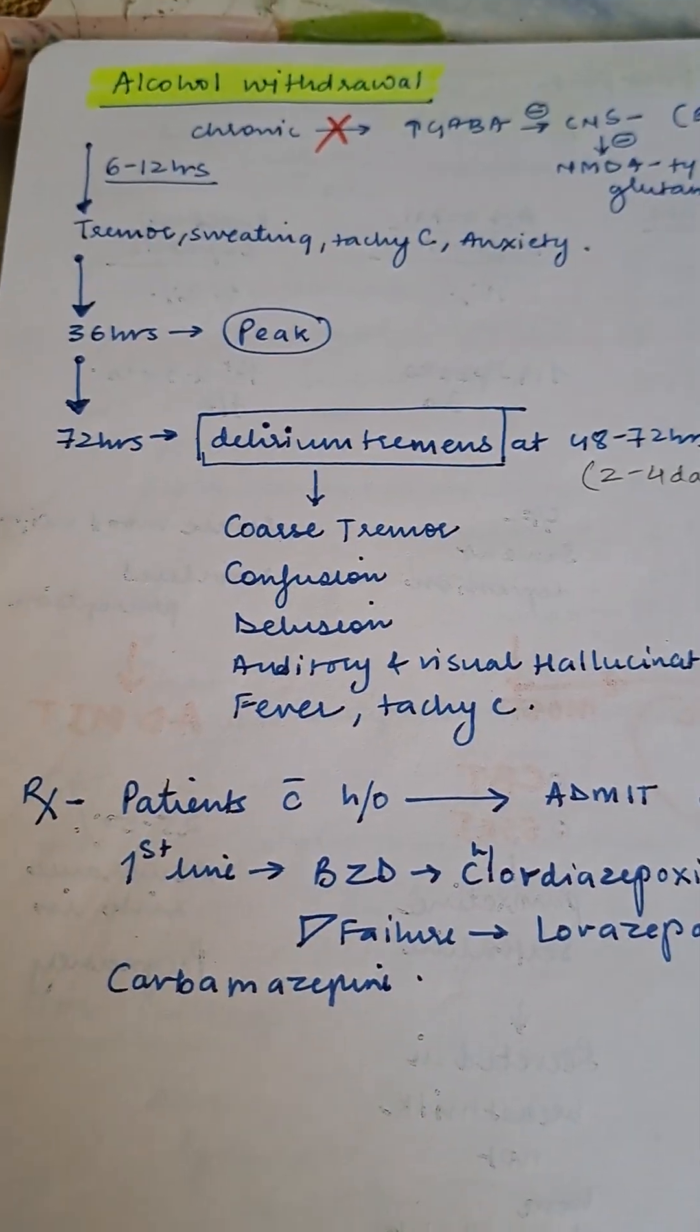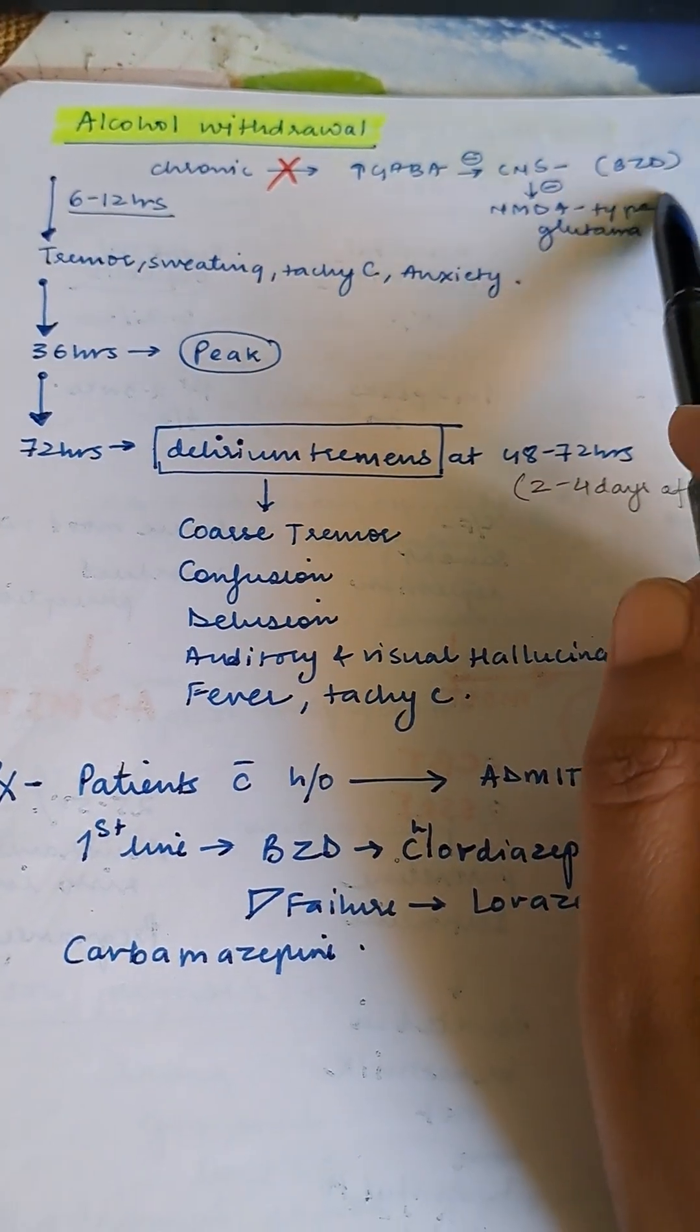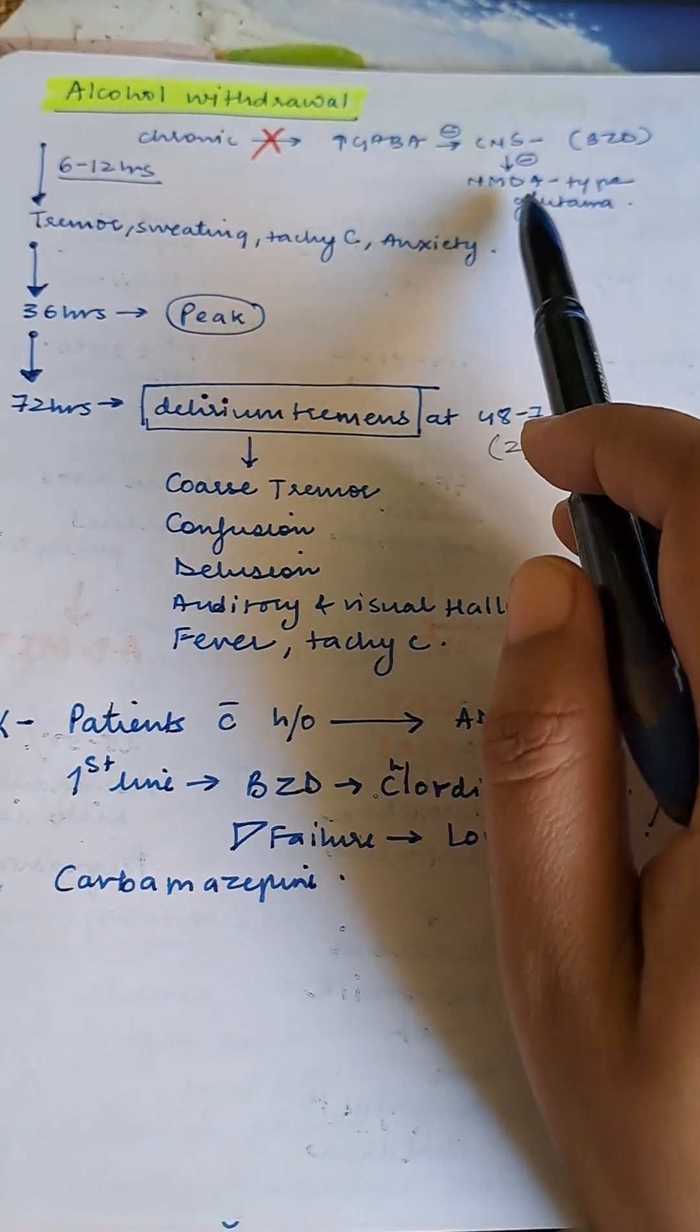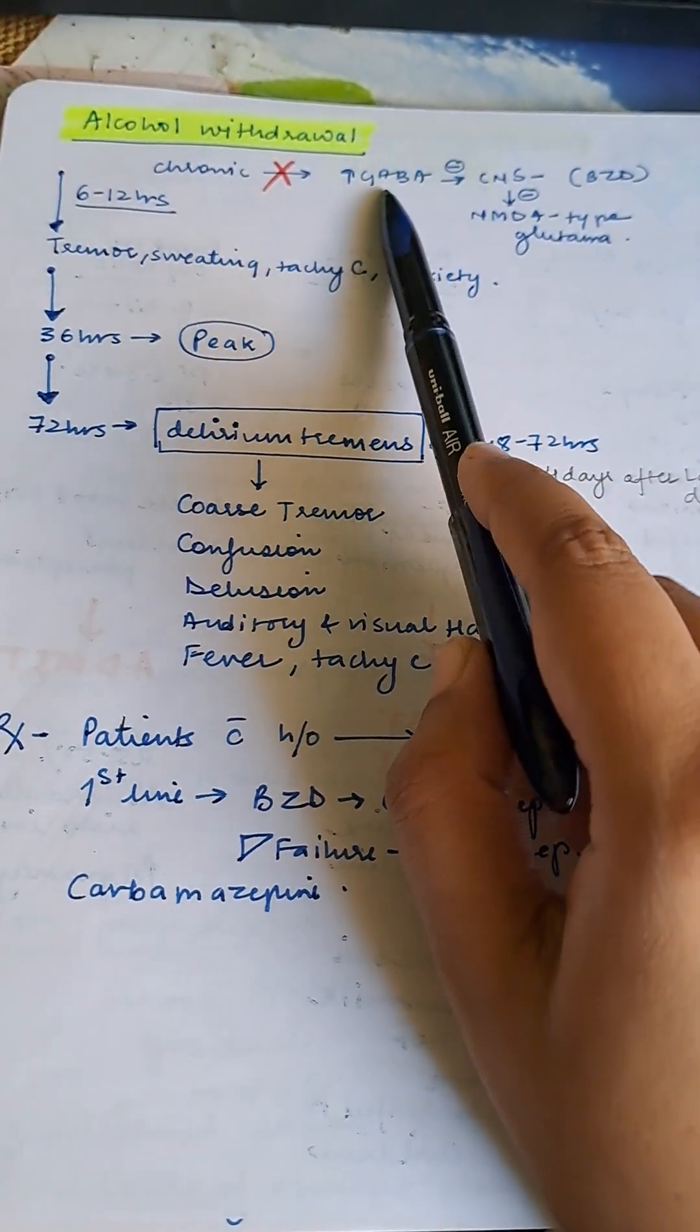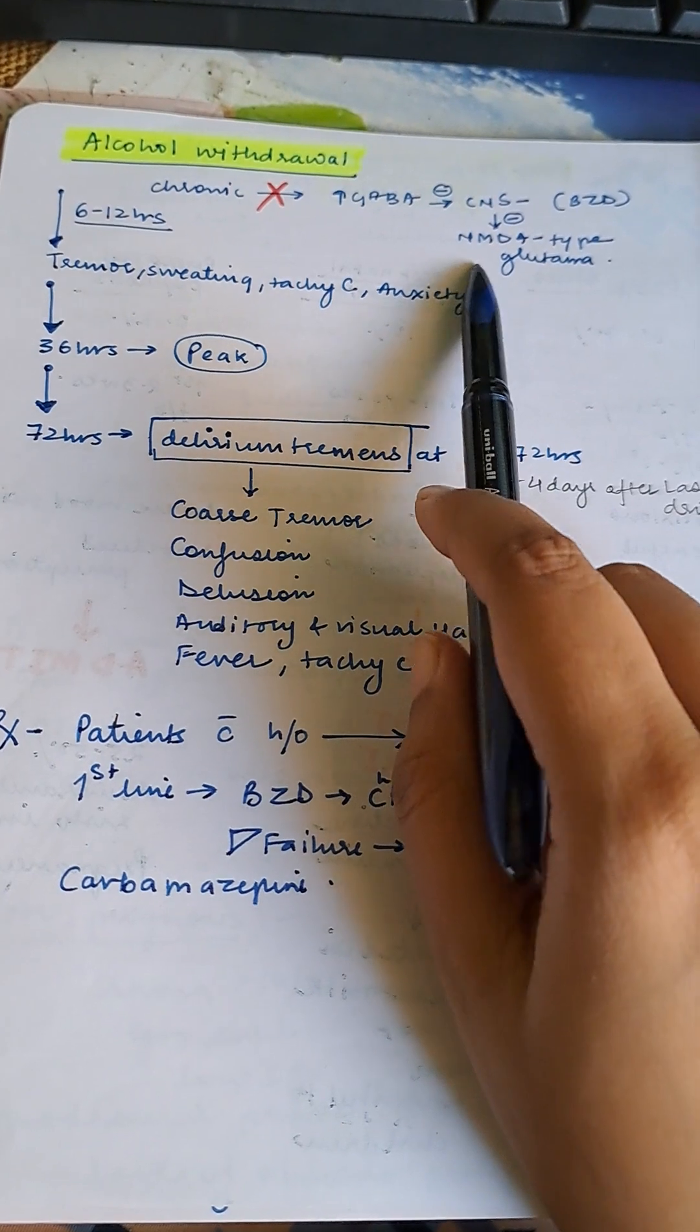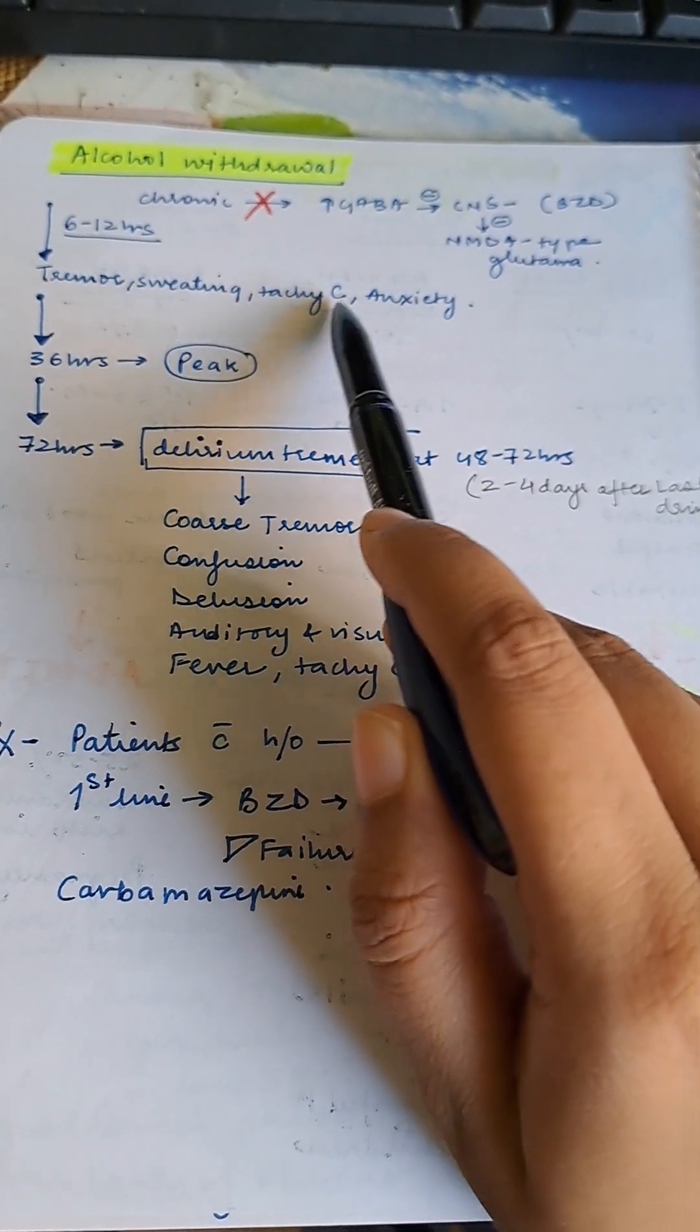Alcohol withdrawal. In chronic alcoholics, there is increased GABA which inhibits the CNS and inhibits NMDA-type glutamate receptors. In alcohol withdrawal, the increased GABA is lost, so there's no inhibition of CNS. This stimulates NMDA-type glutamate receptors. In 6 to 12 hours after chronic alcohol withdrawal, tremor, sweating, tachycardia, and anxiety will occur.